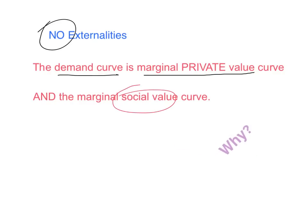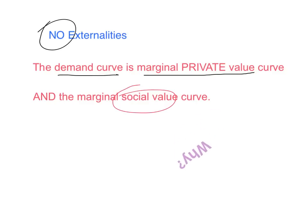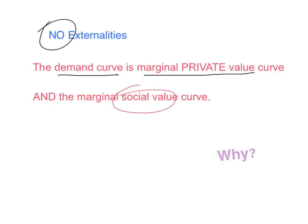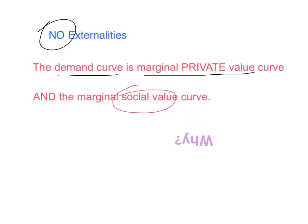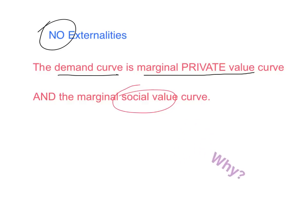Why is that the case? Well, remember, if there are no externalities, then all of the value created by a transaction is the value to the buyers who get the goods and services. So the demand curve, which measures buyers' willingness to pay, also gives their marginal private value. And because they're the only ones who get value, it also measures the marginal social value.